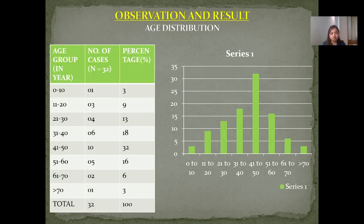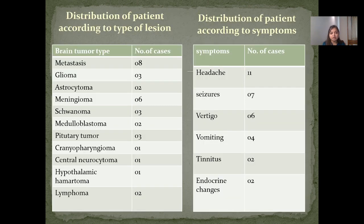Observations and Results: The most common age group involved is 41–50 years. Out of 32 patients, the maximum number of 8 cases are metastatic brain lesions, followed by meningioma with 6 patients. Various symptoms include headache, seizures, vertigo, vomiting, tinnitus, and endocrine changes. The maximum number of patients — 11 — presented with headache.